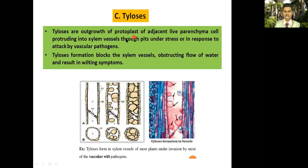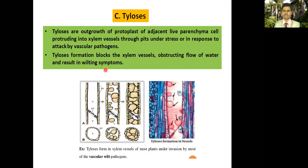Development of tyloses: tyloses are outgrowths of the protoplast of adjacent living parenchyma cells that protrude into the xylem vessels through pits, under stress or in response to attack by vascular pathogens. Tylosis formation blocks xylem vessels, obstructing the flow of water and resulting in wilting symptoms — this type of tylosis development can be observed in Fusarium wilt.